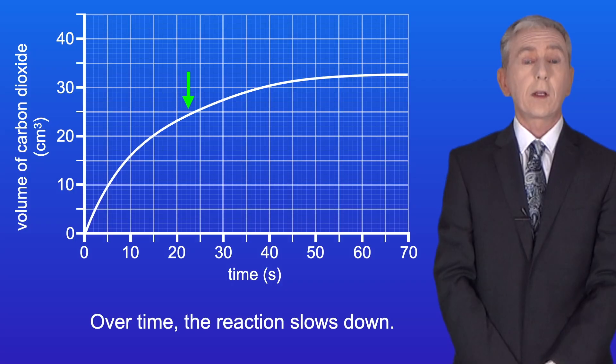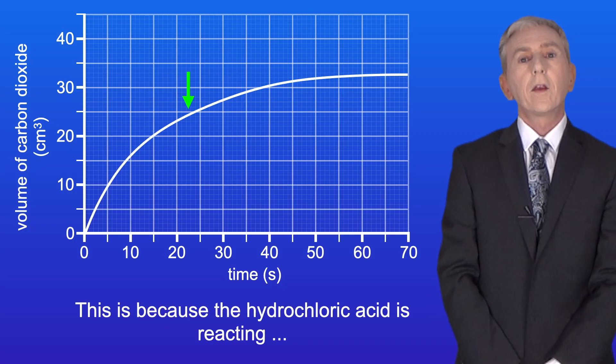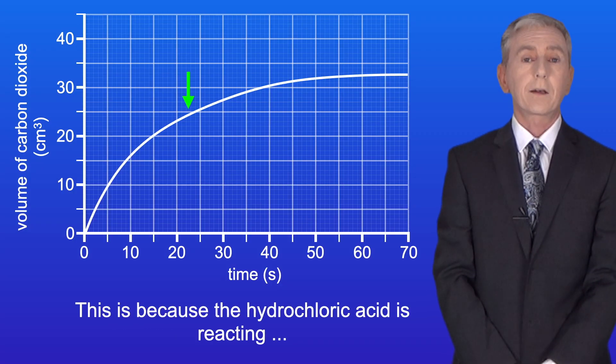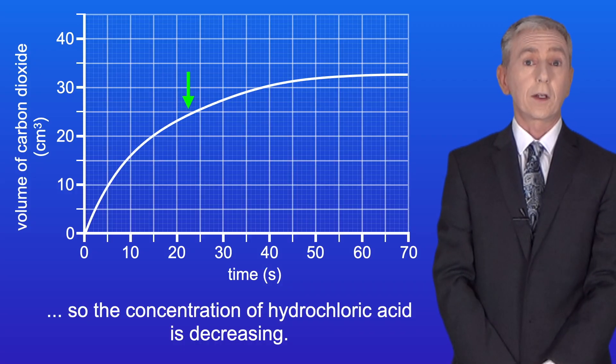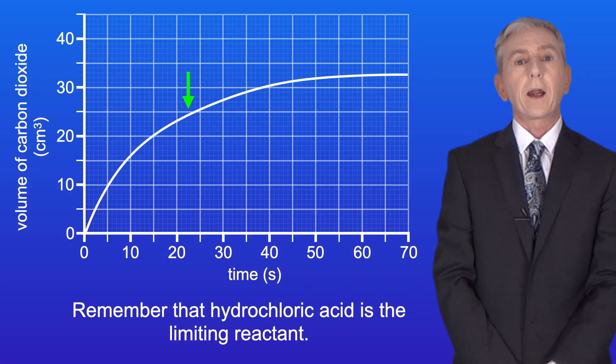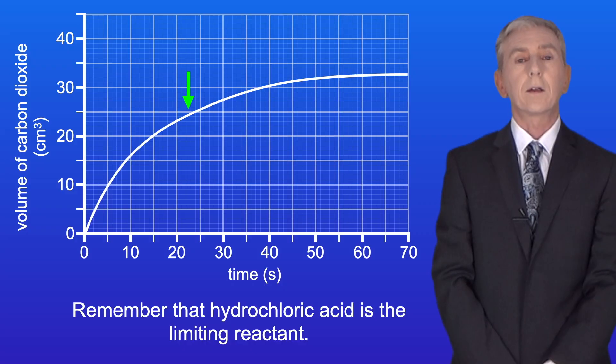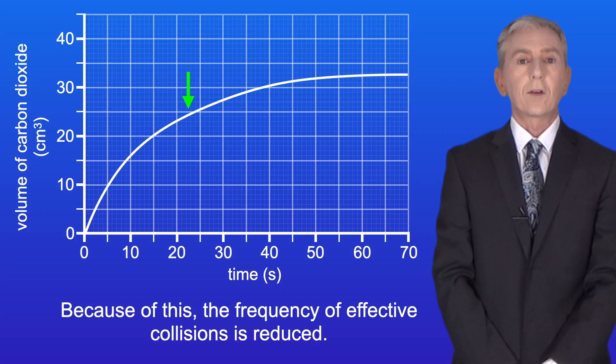This is because we have a high concentration of reactants and a high frequency of effective collisions. Over time the reaction slows down. This is because the hydrochloric acid is reacting. So the concentration of hydrochloric acid is decreasing. And remember that hydrochloric acid is a limiting reactant. So because of this the frequency of effective collisions is reduced.